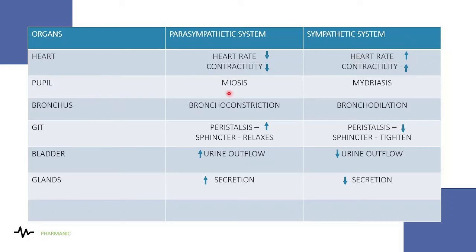For the pupil, the sympathetic system causes dilation — mydriasis. This occurs because in a fearful or stressful situation, such as standing in a dark room, the pupil opens wide so more light can enter and we can see clearly. For the bronchus, it also gets dilated, increasing oxygen movement in the blood, which is important in stressful situations.